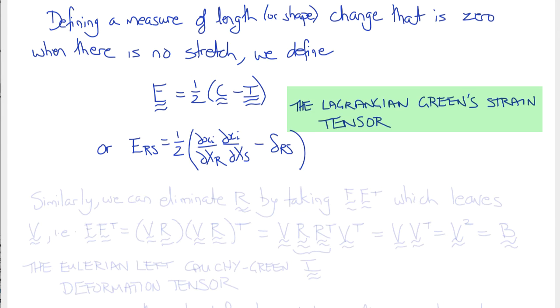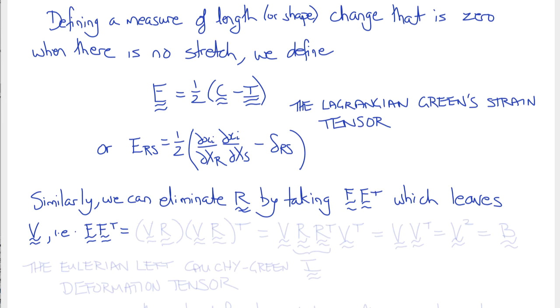Similarly, we could also eliminate R from F by taking the product FF transpose instead of F transpose F. This leaves V instead of U. FF transpose equals VR times (VR) transpose, which is VR times R transpose V transpose. Since RR transpose is I, the identity tensor, this leaves V squared, or B squared since V is symmetric.